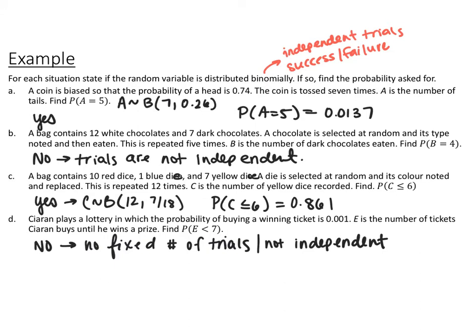For situation C: a bag contains 10 red dice, 1 blue die, and 7 yellow dice. A die is selected at random, its color is noted, and then replaced. This is repeated 12 times, and C is the number of yellow dice recorded — find P(C ≤ 6). Because the die is replaced, the probabilities don't change between trials, so they are independent. Success means getting a yellow die. So yes, this is binomial with C ~ B(12, 7/18). Using binomial CDF, P(C ≤ 6) = 0.861.